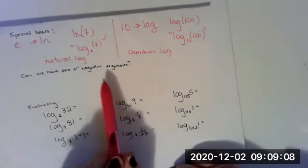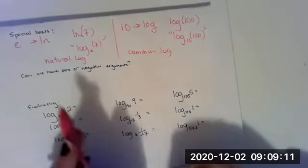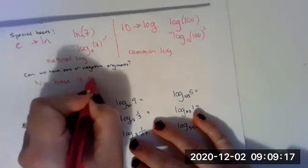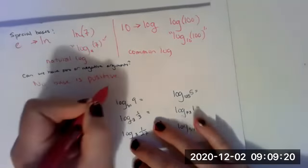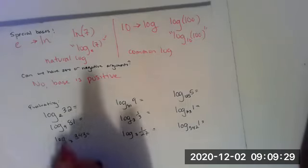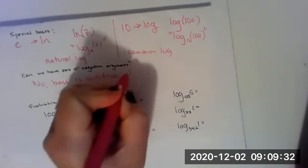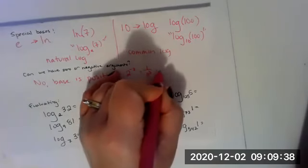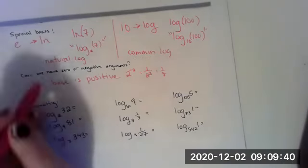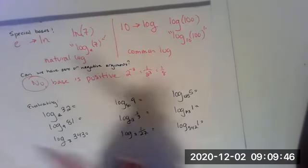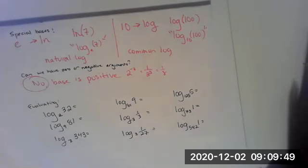Can we have zero or negative arguments? No. Your base is positive. The base will always be positive in this class. You can experiment with what happens when you have negative bases with exponents. It gets kind of interesting. So if you have a positive base, there's nothing you can raise the base to that will get you a negative argument. Even if you raise it to a negative exponent, that's still going to be one over two to the third, which is one over eight. So your arguments will always be positive. You're never going to have a zero or negative argument. If you do, it's going to be does not exist.